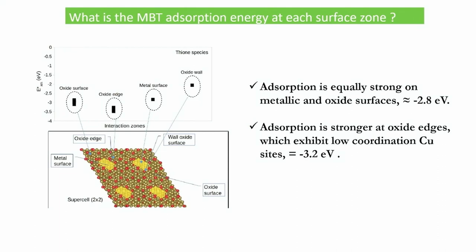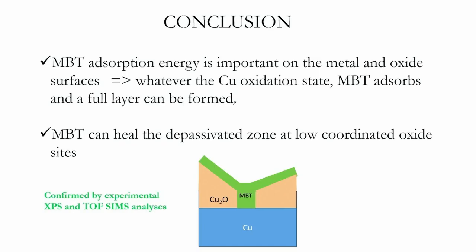It was interesting to see where MBT goes in this case: first it goes to the oxide edges, where atomic coordination is minimal and sites are most reactive, then it covers the oxide surface, and finally covers the entire surface. This shows that MBT can heal weak zones on copper.